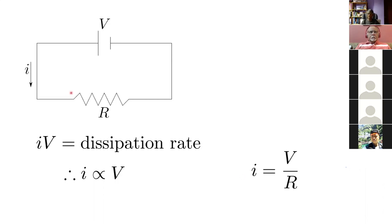This satisfies what we said: if I can express the energy dissipation rate as a product of a force and a flux, then the flux will be proportional to the force. In this particular case of Ohm's law the proportionality constant is 1/r.